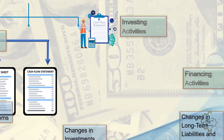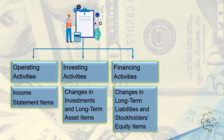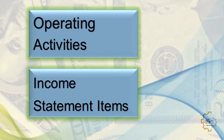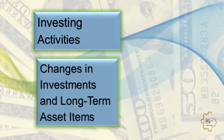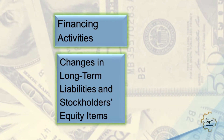Classification of cash flows: the statement of cash flows classifies cash receipts and cash payments as operating, investing, and financing activities. Operating activities include the cash effects of transactions that create revenues and expenses, thus entering into the determination of net income. Investing activities include acquiring and disposing of investments and property, plant and equipment, as well as lending money and collecting on loans.